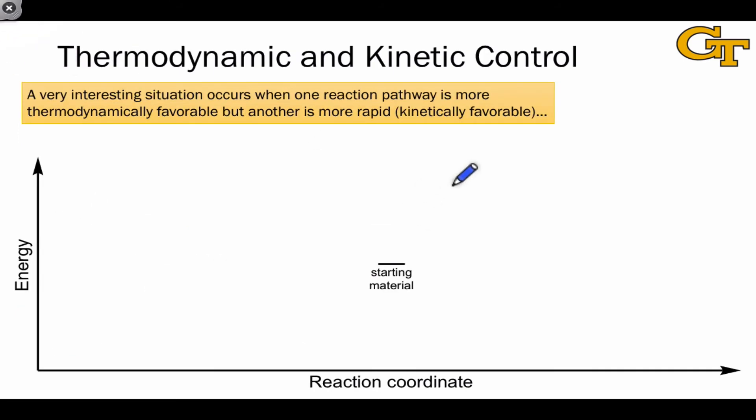Because there are two separate issues, thermodynamics and kinetics, we can get into an interesting situation where two competing reaction pathways might have different senses of favorability. Let's say we start with a starting material S, and S has the potential to form two products with different structures.